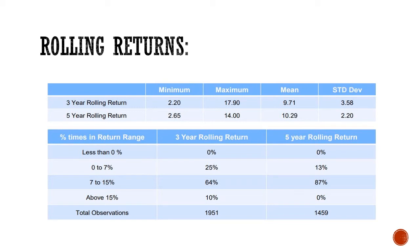Now we will look at the rolling returns. What are rolling returns? Looking at the table, we can see the probability of returns — less than 0%, 0 to 7%, and higher return ranges. There are probability figures for each return bracket.